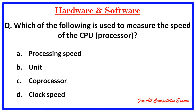Question 20: Which of the following is used to measure the speed of a CPU processor? Right answer is option D — clock speed.